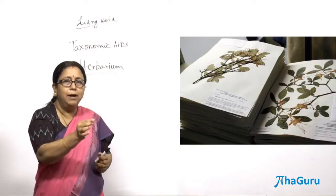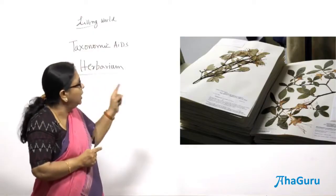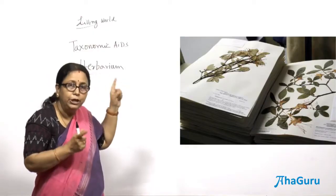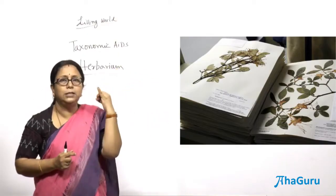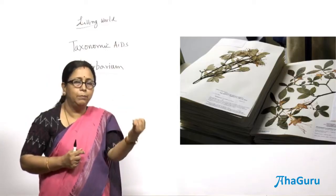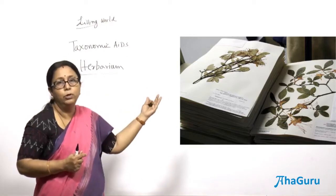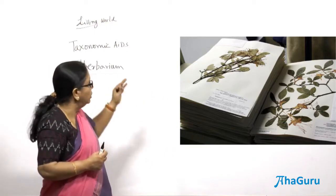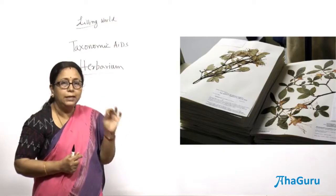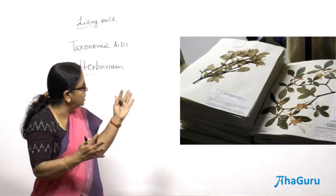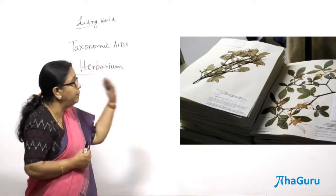The pressed, preserved plant is taken and mounted on a big white sheet, and all the information about that particular plant has to be explained there — its characteristics, its binomial nomenclature, its local name, and also when and where it was found. The whole information has to be provided in that sheet. It is known as a herbarium sheet. Like these sheets, all the sheets are preserved by adding chemicals and other things and are available in herbariums.